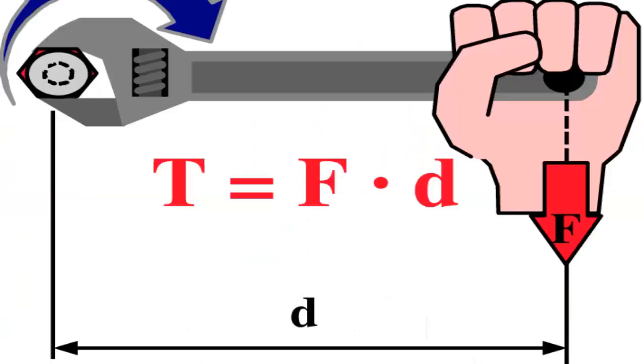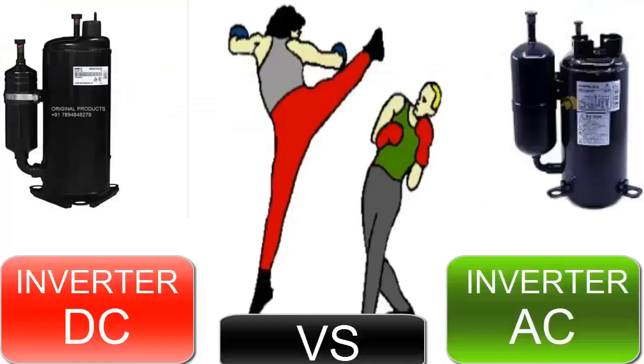10. DC compressors provide high torque at low speeds, while 3-phase inverters offer good torque, though generally not as high as DC compressors at low speeds.